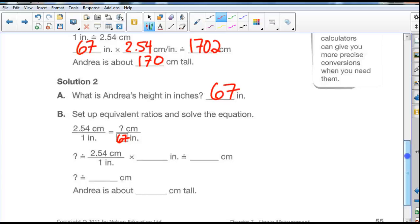We can put 67 inches in there. We know that if we have the same unit on the bottom and on the top, they cancel each other out. So the only unit I have left is centimeters. So I just take 2.54 times 67 there and end up with 170 centimeters. Well, 170.2, rounded to 170. So Andrea is about 170 centimeters tall.